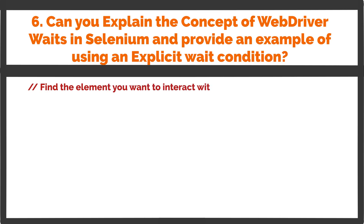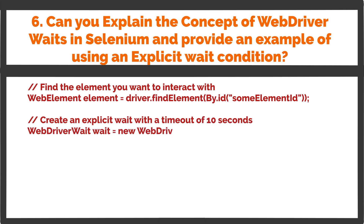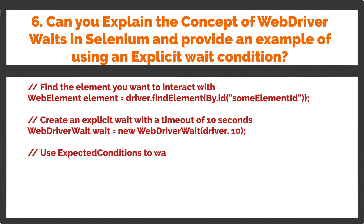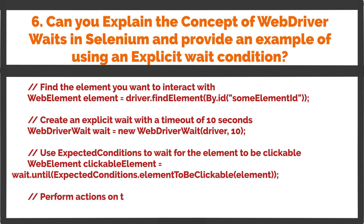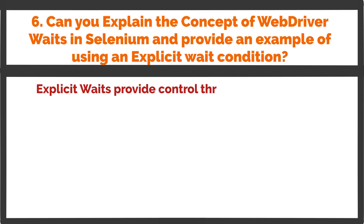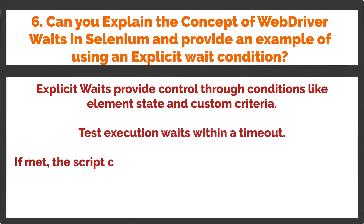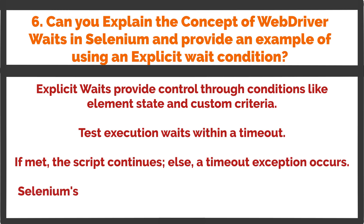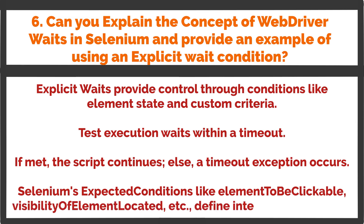Find the element you want to interact with. WebElement wait.until(ExpectedConditions.elementToBeClickable(element)); then perform actions on the clickable element: clickableElement.click(). Explicit waits provide control through conditions like element state and custom criteria. Test execution waits within a timeout — if the condition is met, the script continues; otherwise, a timeout exception occurs. Selenium's expected conditions like elementToBeClickable, visibilityOfElementLocated, etc., define interaction readiness.